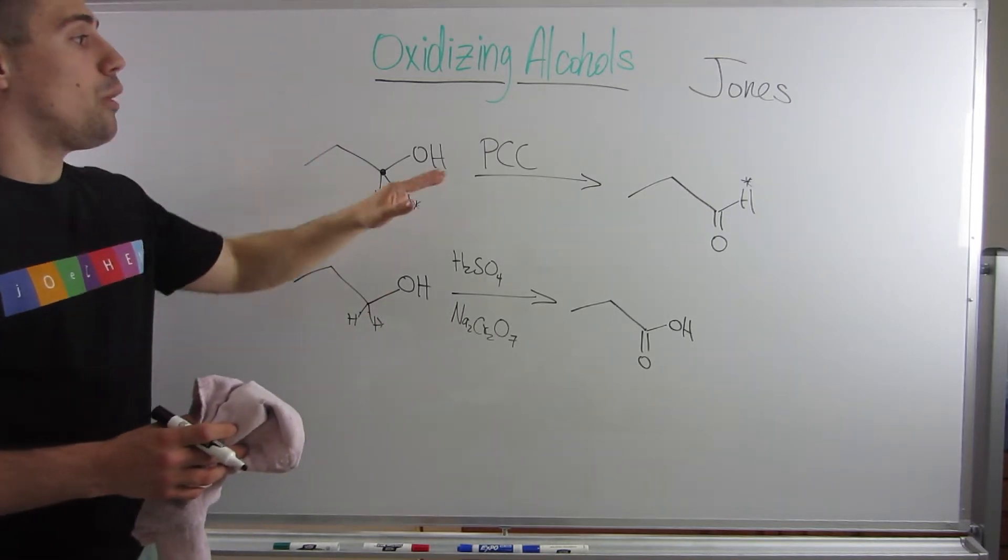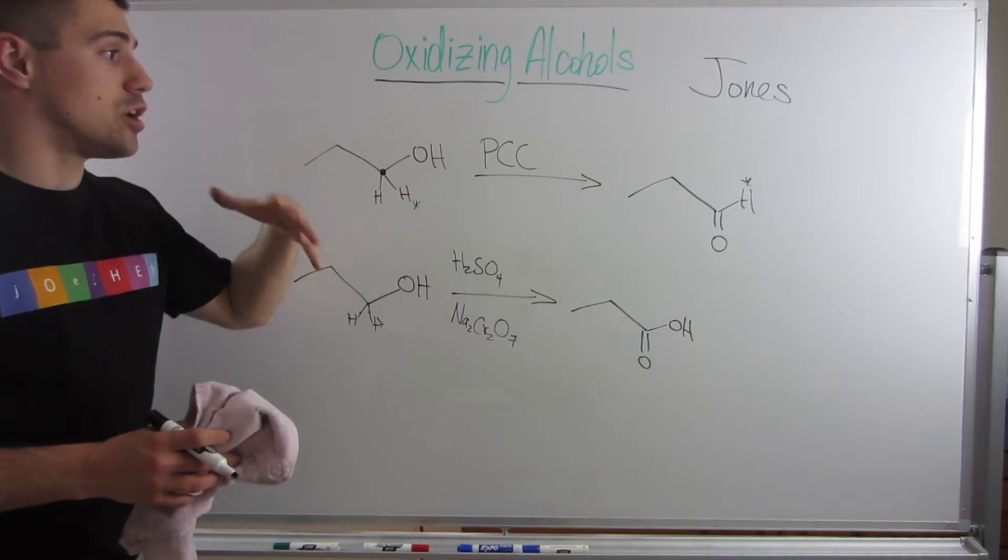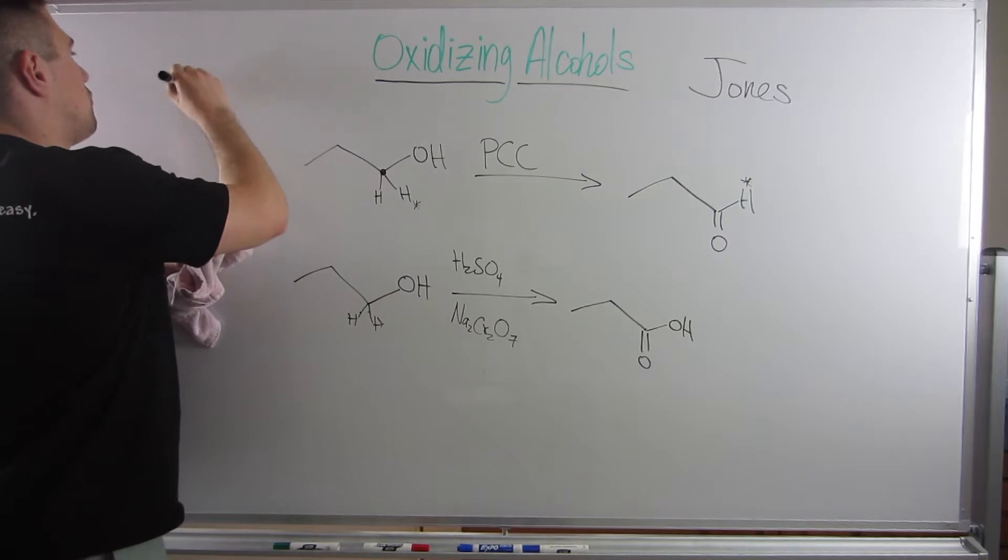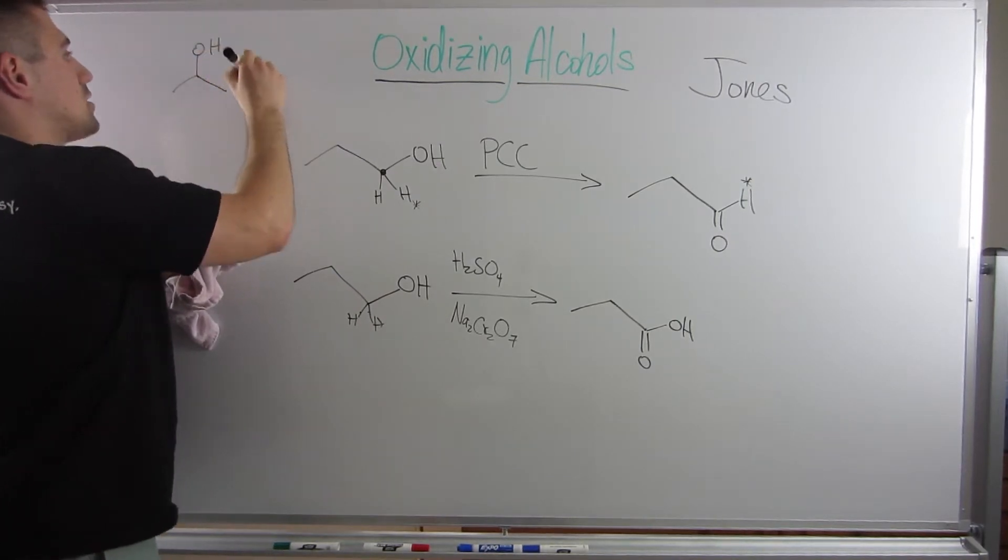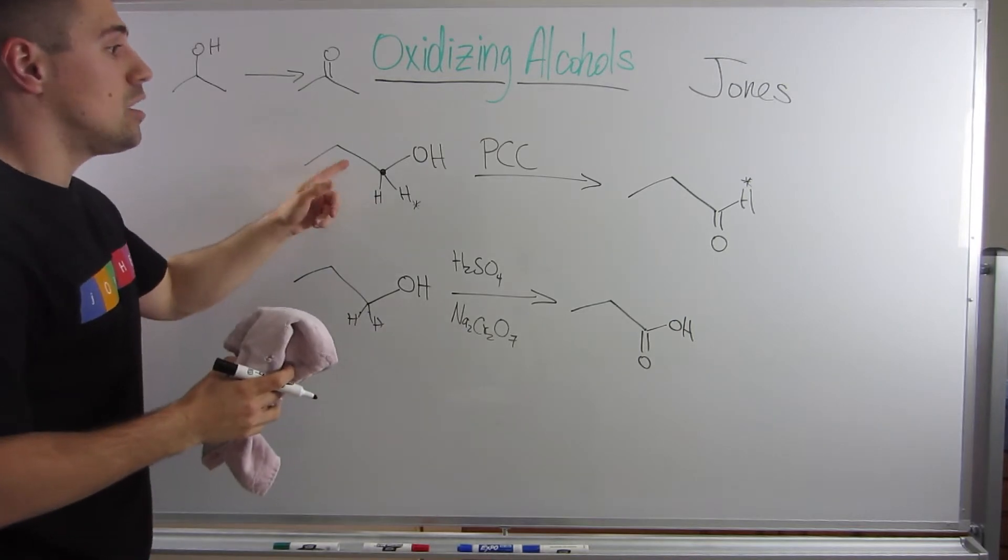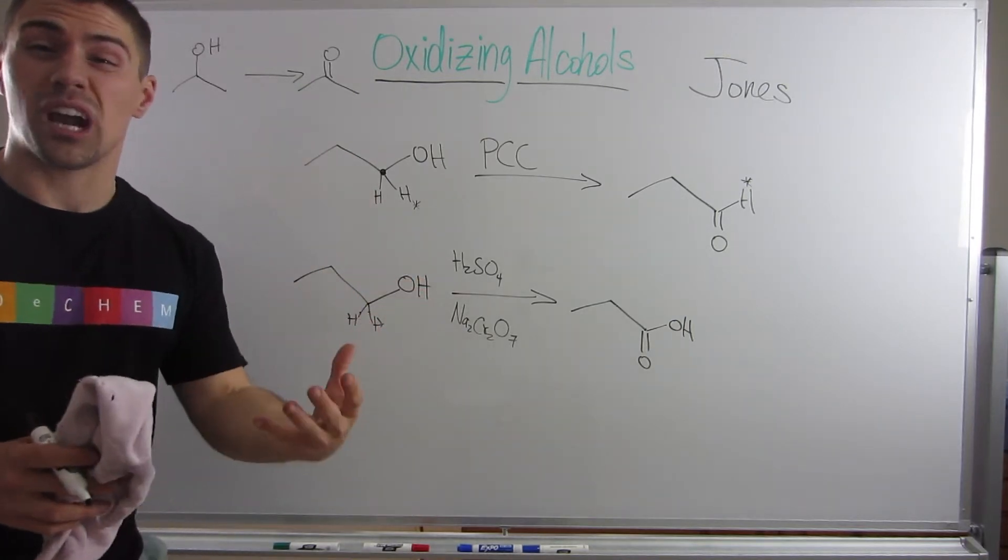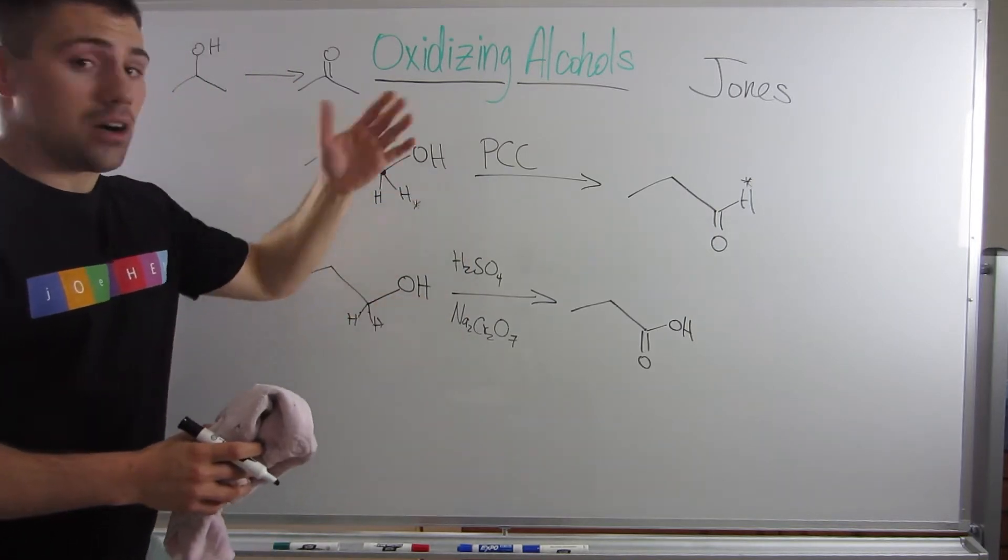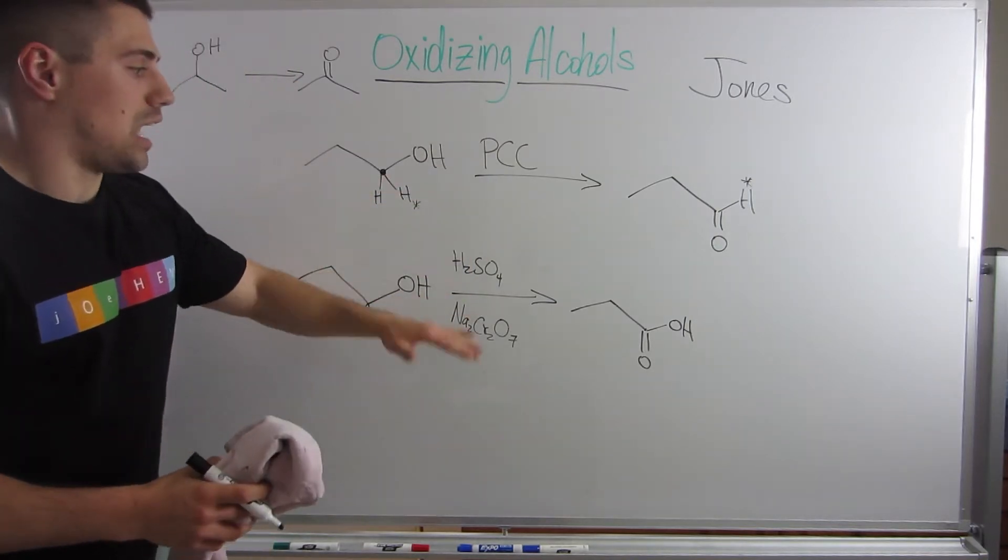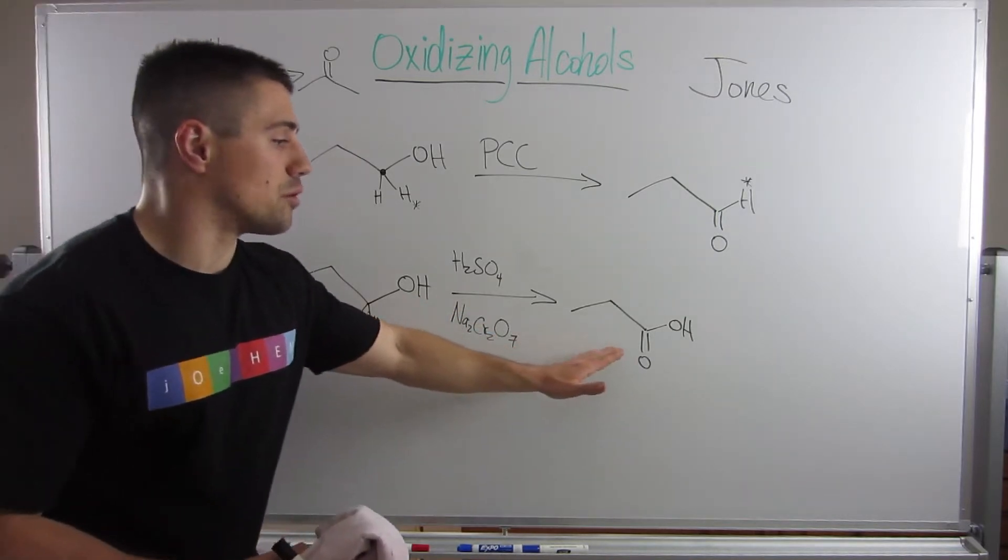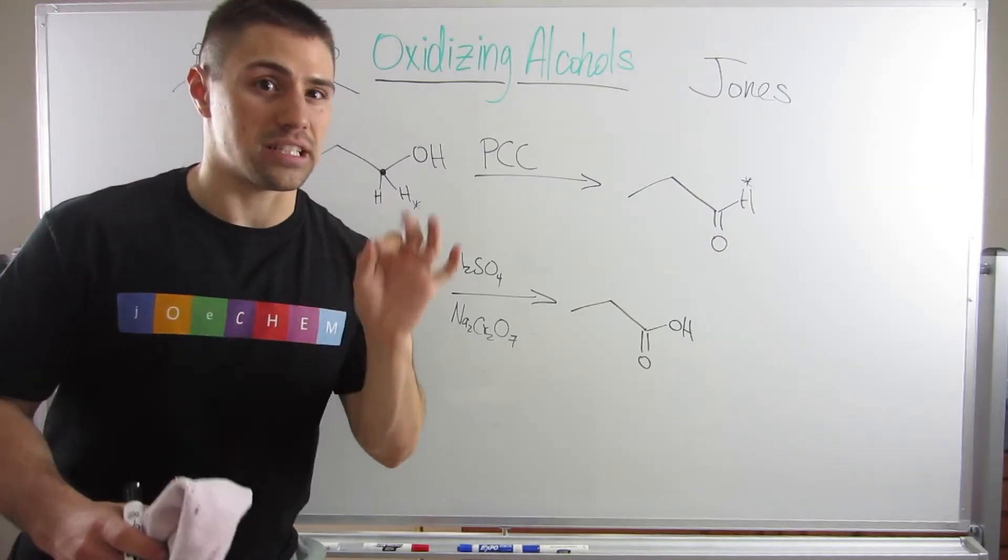So the take-home point here is PCC and Jones, if you have a secondary carbon, right, you get ketones, just like we did before with isopropanol. They will both give you the ketone. However, PCC, in a terminal sense, in a primary sense, it gives you the aldehyde. And on the other flip side of that, the Jones reagents, the H2SO4 and the Na2Cr2O7, they give you the full-blown carboxylic acid. And there's where the difference lies.